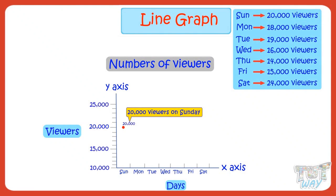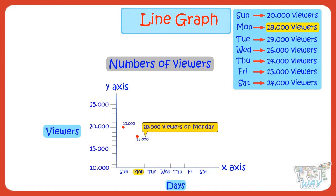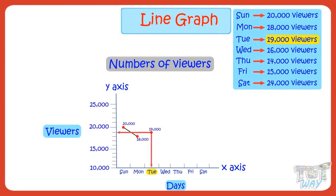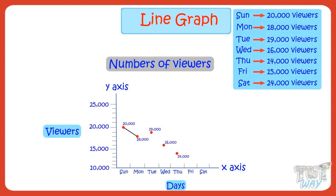Now, the next information: number of viewers on Monday are 18,000. So we will make a dot along the day of Monday and viewers 18,000. This dot corresponds to the day of Monday and 18,000 viewers. Now join the two dots using a line. Plot the next information: number of viewers on Tuesday are 19,000. So we will make a dot along the day of Tuesday and the viewers 19,000. This dot corresponds to the day of Tuesday and viewers 19,000. Similarly, plot the dots for all days, join the dots using a line, and our line graph is ready.